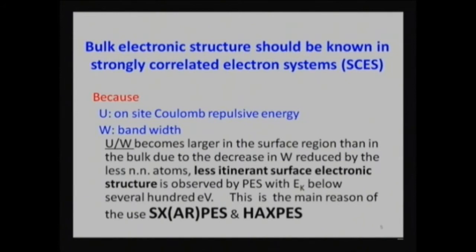Why should bulk electronic structures be known in the case of strongly correlated electron systems? Because two physical quantities — on-site Coulomb repulsive energy U and bandwidth W — their ratio U over W is quite decisive in realizing either itinerant or localized electronic structures. On the surface, since the number of nearest-neighbor atoms is fewer, W becomes smaller, so U/W becomes larger, and the electronic structure becomes less itinerant. Therefore, we go to higher energy photoemission in the soft X-ray or hard X-ray region.